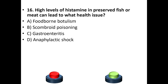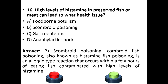Sixteenth question: High levels of histamine in preserved fish or meat can lead to which health issue? Options: foodborne botulism, scombroid poisoning, gastroenteritis, anaphylactic shock. The answer is option B — scombroid poisoning. Scombroid fish poisoning, also known as histamine fish poisoning, is an allergic-type reaction occurring within a few hours of eating fish contaminated with high levels of histamine.